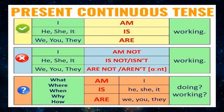Present continuous is a verb tense used to show that an ongoing action is happening now, either at the moment of speech or now in a larger sense. The present continuous is made from the present tense of the verb to be and the -ing form of the verb. For example: I am working. I am not working. Am I working?